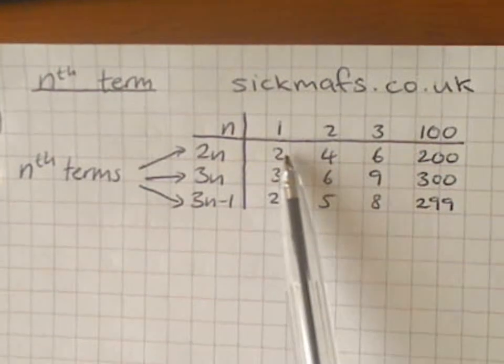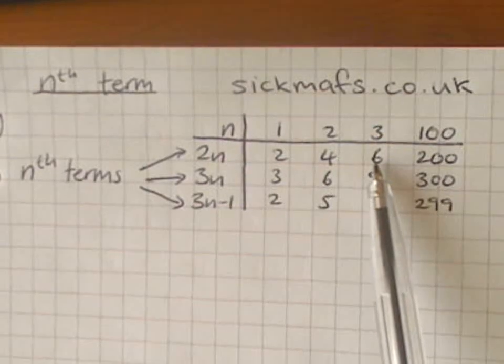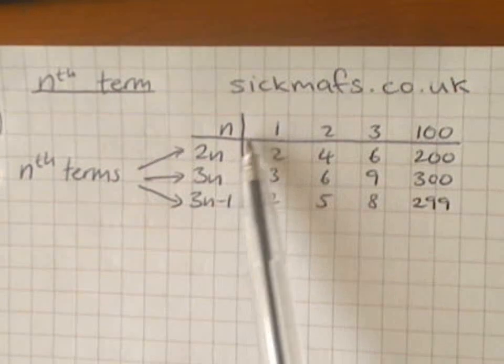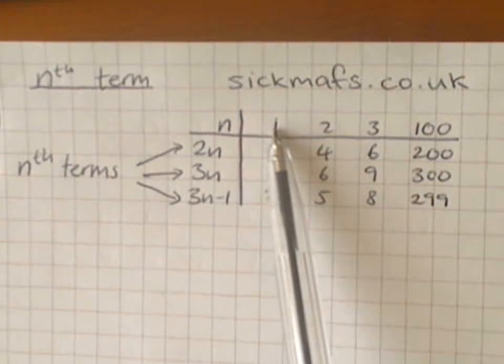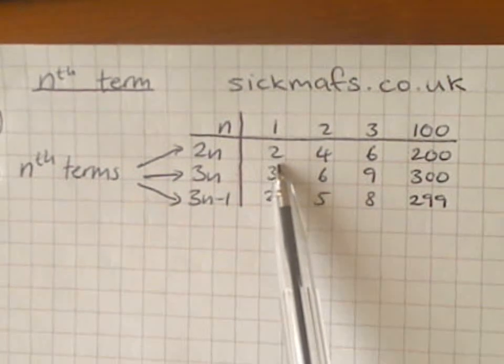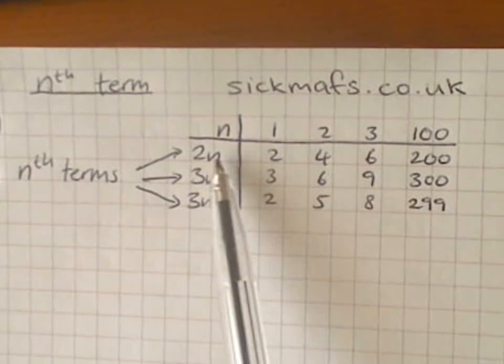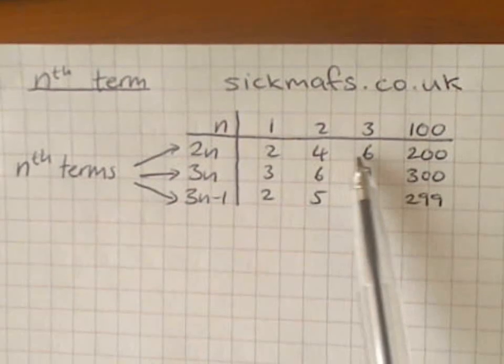Now, look at this pattern. Two, four, six. You know it's a two times table. And the rule for that is just 2n because if you had n is one and doubled it, you'd get two. If you had n equals two, you doubled it, you'd get four. It's quite obvious that 2n just gives you the two times table.